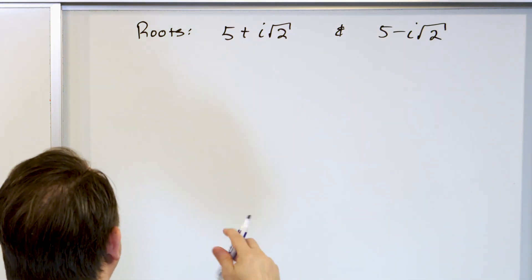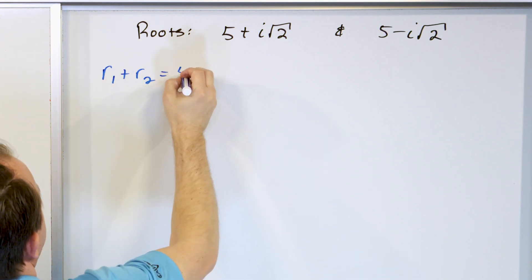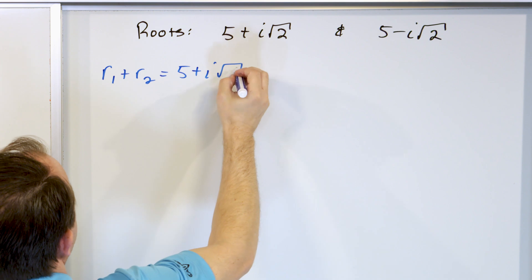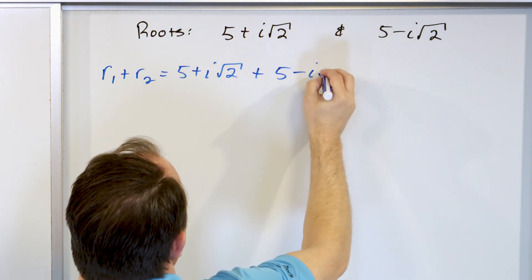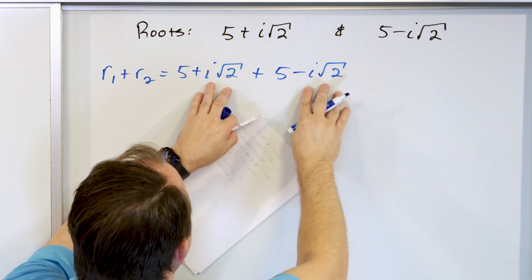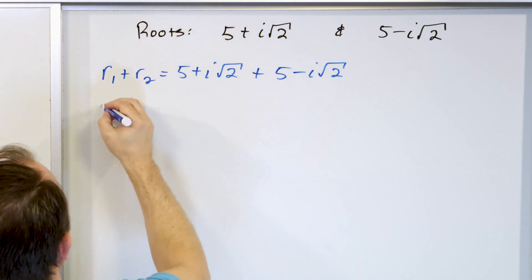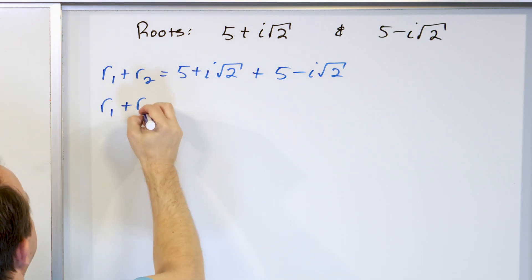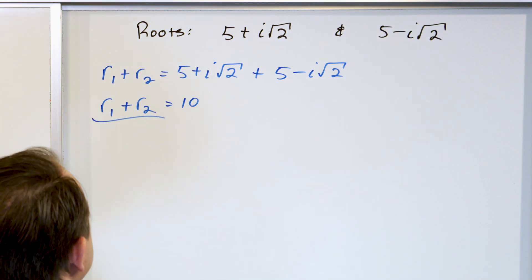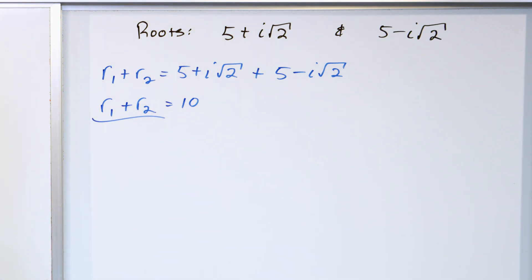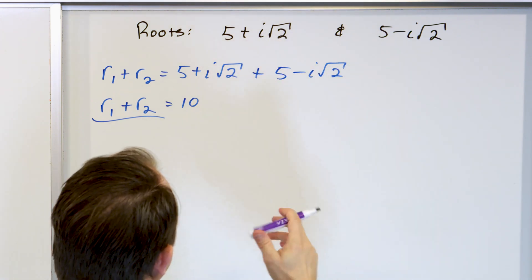Find the sum: r1 plus r2 is (5 plus i·root 2) plus (5 minus i·root 2). The i·root 2 and negative i·root 2 add to zero, so all you have left is 5 plus 5, which is 10. Notice that's a common theme — with conjugate pairs, the imaginary parts always cancel when you add them.